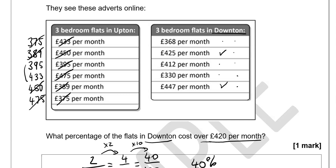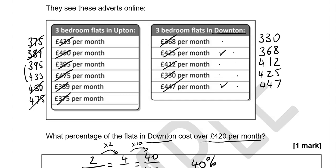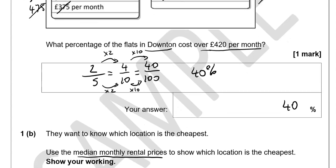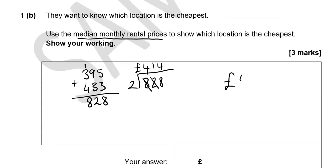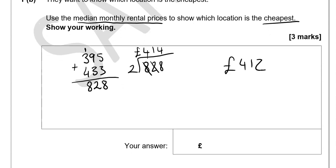Now for Downton, putting the prices in order: £330, £368, £412, £425, £447. We have £412 in the middle, so the median for Downton is £412. £412 is cheaper than £414, and we're looking for the cheapest, so the answer is Downton.